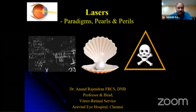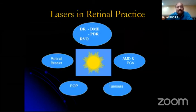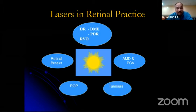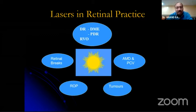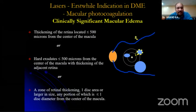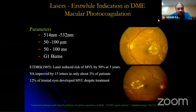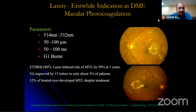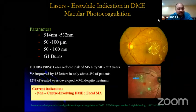The applications of lasers in retinal practice are several — for diabetic retinopathy, proliferative complications, and less so for diabetic macular edema nowadays with anti-VEGF therapy. Other indications include prophylaxis of retinal breaks, ROP, tumors, AMD, and PCV with photodynamic therapy. ETDRS gave us the classic three criteria for clinically significant macular edema where macular photocoagulation is indicated. ETDRS showed laser reduced risk of moderate vision loss by 50% in three years, but vision improved in only about 15 letters in only 3% of patients, and 12% still developed moderate vision loss despite treatment.